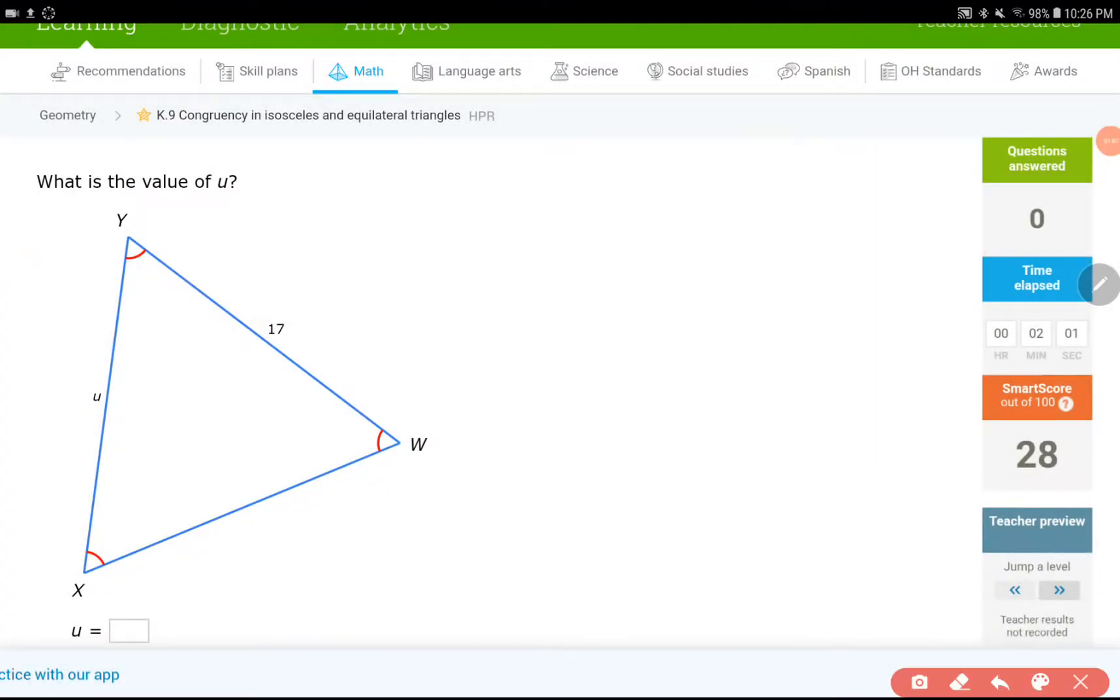Okay, here is another simple question. It is about the value of U. For U, we have an equilateral triangle because one, two, and three angles are equal. Equiangular triangle, by the way.